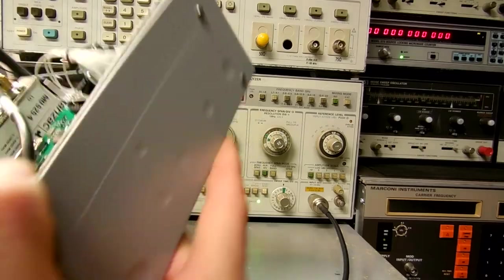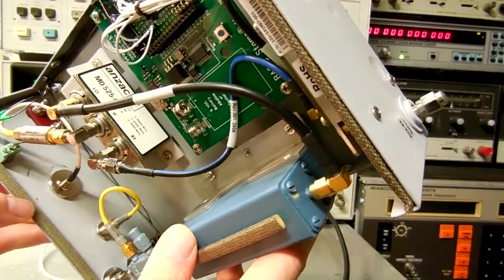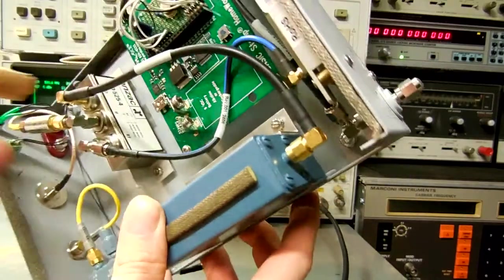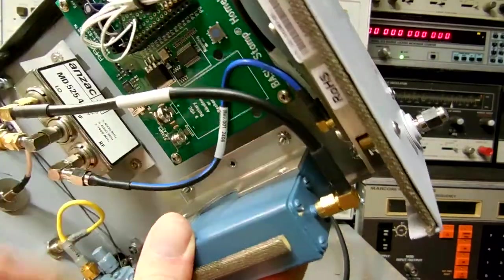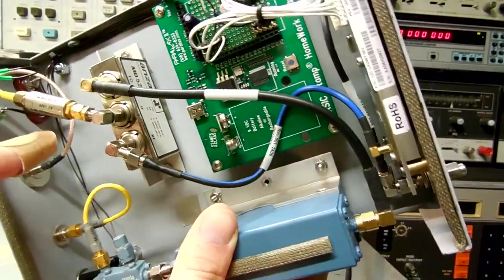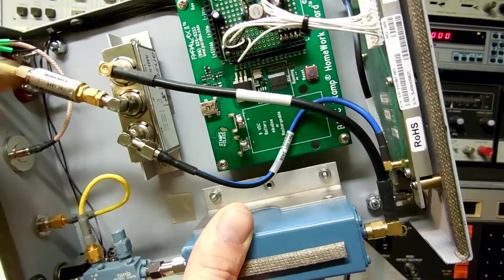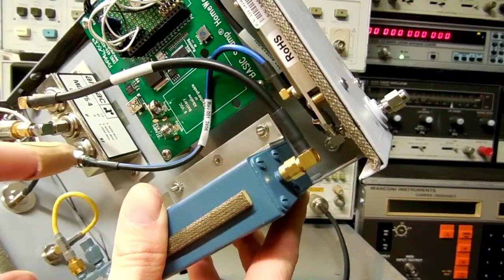The actual mixer I'm using is an ANZAC MD525. This is the local oscillator input coming from the spectral analyzer. The IF output. I have a 3 dB attenuator, a nice Mini Circuits attenuator, and the RF input.